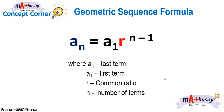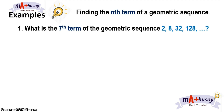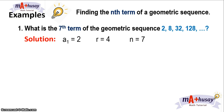We will now use this formula in solving the nth term of any geometric sequence. Example number 1: What is the 7th term of the geometric sequence 2, 8, 32, 128? To solve this, we find the given values. The first term is 2. The common ratio is 4 because 2 times 4 gives you 8, 8 times 4 gives you 32, and so on. Or you can just divide 8 by 2, which gives you 4. And n is 7 because we are talking about the 7th term.